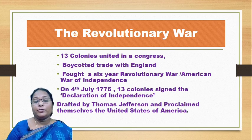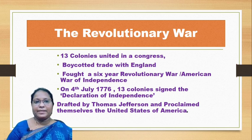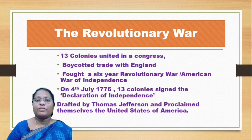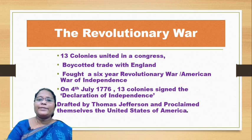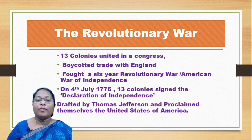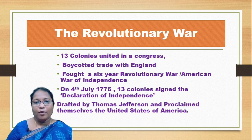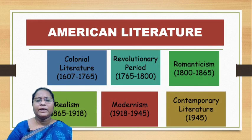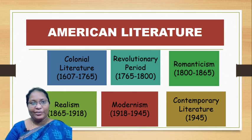The majority of settlers were British, followed by German, Dutch, and Swedish settlers. The British began their imperialism in America, and the native peoples no longer wanted to be called Native American Indians — they wished to be called Native Americans. The British levied heavy taxes upon them, which was resented. The 13 colonies united in a Congress, boycotted trade with England, and fought a six-year Revolutionary War, also known as the American War of Independence. On 4th July 1776, the 13 colonies signed the Declaration of Independence, drafted by Thomas Jefferson, and proclaimed themselves the United States of America.